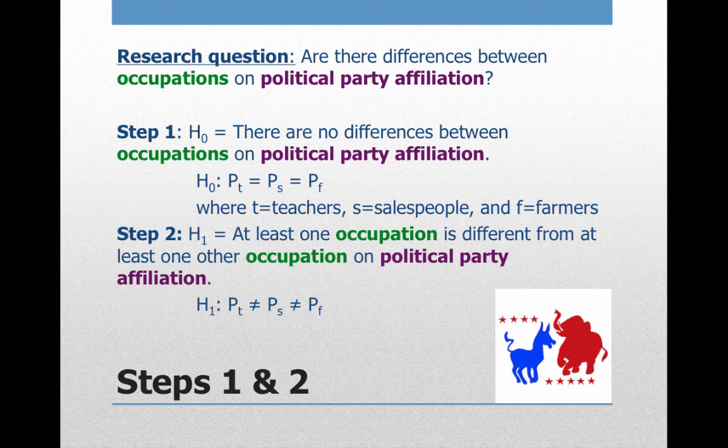This is a very important distinction when writing out equations for the null and research hypothesis in chi-square analysis. Unlike correlation — where rho denotes population and r denotes sample — or t-tests and ANOVA where mu denotes population mean and x-bar or m denotes sample mean, in chi-square analysis we use capital P as the proportion in both the null and research hypothesis equations.